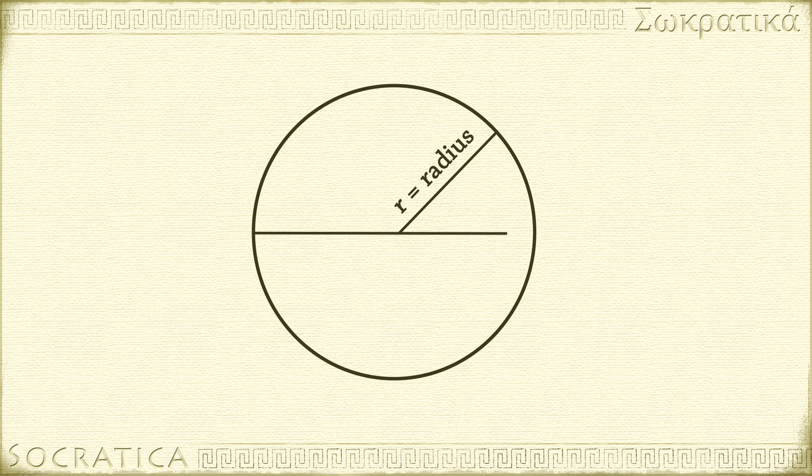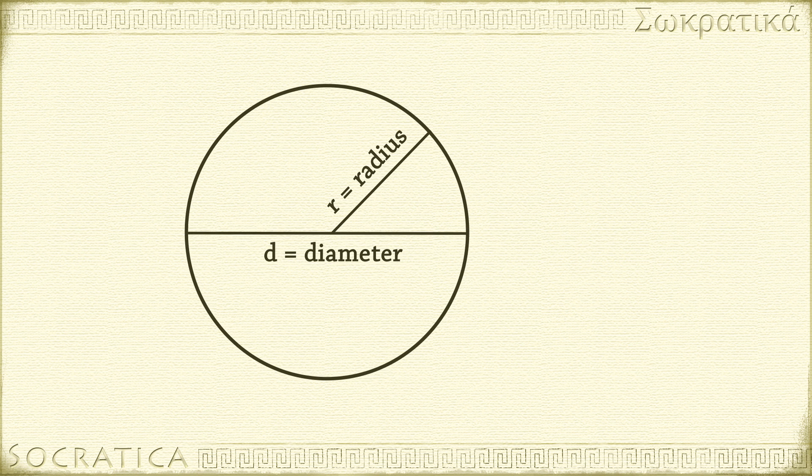The distance across the circle and through the center is called the diameter. The diameter measures the farthest apart two points on the circle can be from one another. Notice that the diameter is twice as long as the radius.